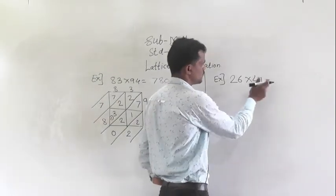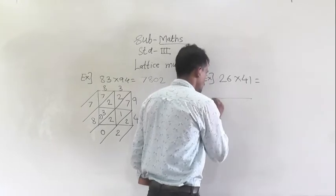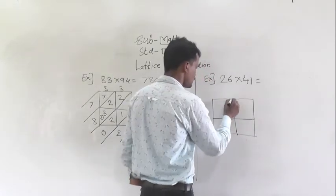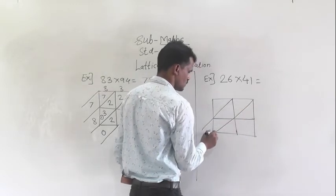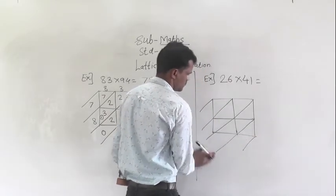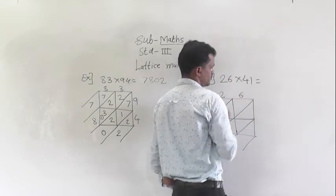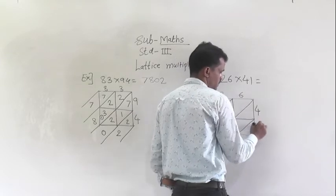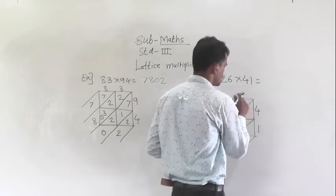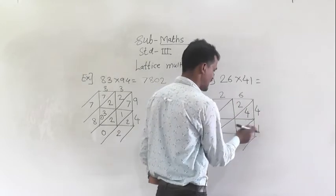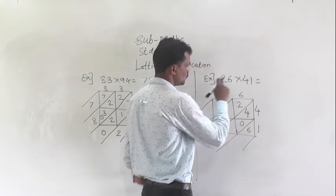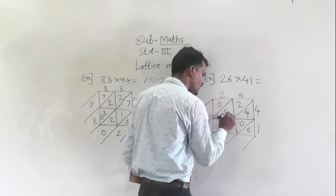Next example: 26 multiply by 41. First draw one grid like this, divide it into 4 equal parts, then make partitions. Write the number 26: 2 right here, 6 right here. Then 41: 4 right here, 1 right here. Now multiply: 6 fours are 24. 6 ones are 6, which is a single digit number, so write 0, 6.